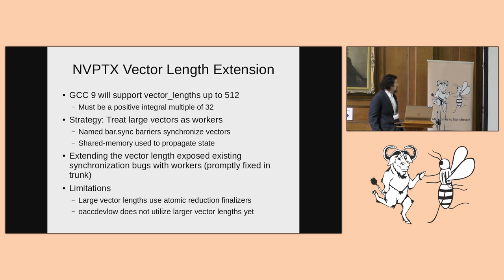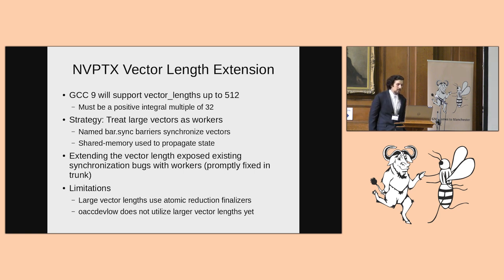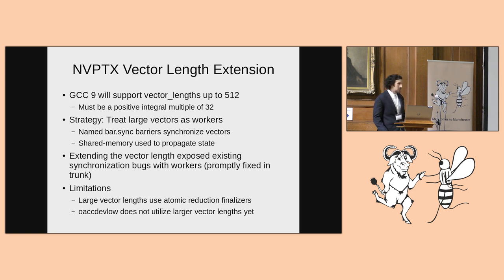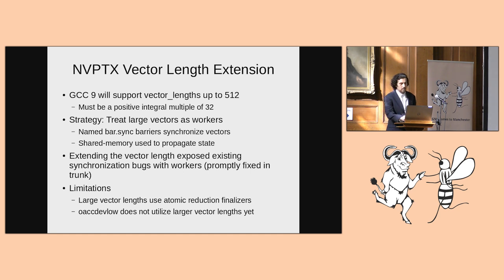When we implemented larger vector lengths, we ran into some synchronization bugs that weren't apparent when vector length was fixed at 32 — we may have been using barriers inside barriers. There are a couple of limitations: first, the reduction finalizer uses an atomic update instead of a parallel tree-type reduction — it should be easy to fix but we haven't gotten around to it. Second, GCC doesn't automatically use large vector lengths; the user has to explicitly request them.